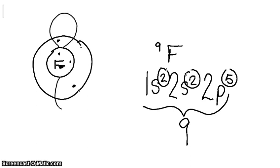One p shell looks like this, and it has 2 electrons in here. And the next p shell looks like this. It has 2 electrons in here.